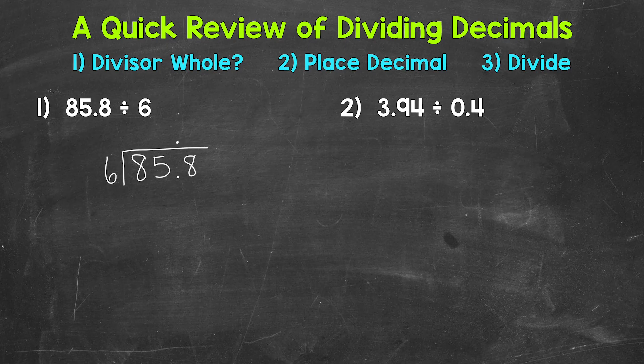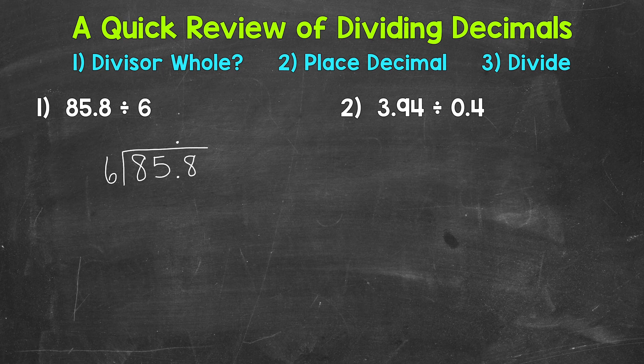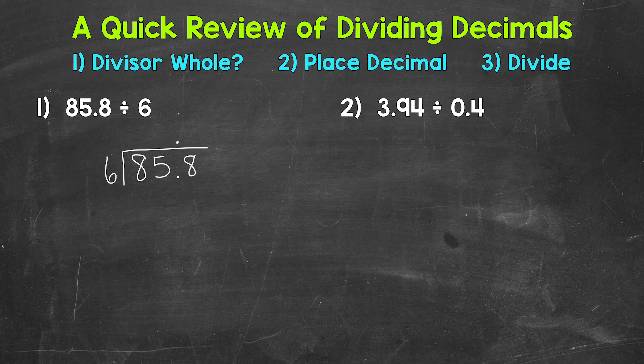Now I do want to mention, for number 2, we will see what happens when we do not have a whole number for our divisor. So once we bring that decimal straight up into our answer, we can divide as we normally would with whole numbers. So we're going to use the same division process that we use with whole numbers: divide, multiply, subtract, bring down, repeat.